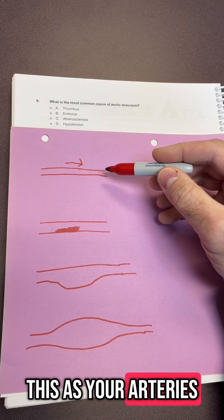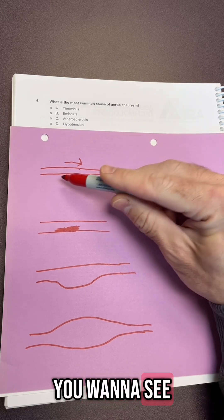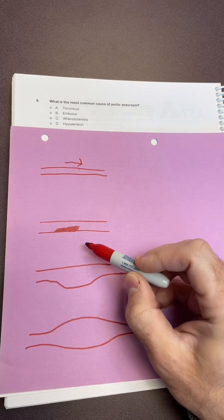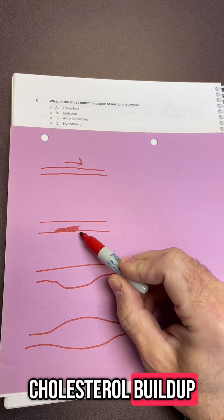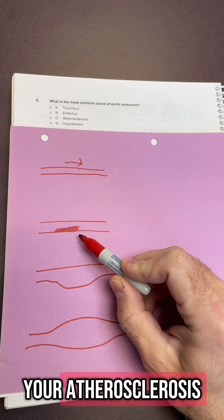So think of this as your arteries. This is what you want to see, a wide open passage for your blood to pass through. This is your cholesterol buildup. This is your C, this is your atherosclerosis.